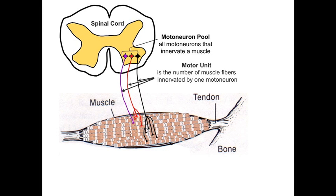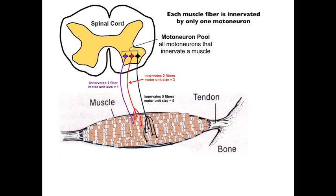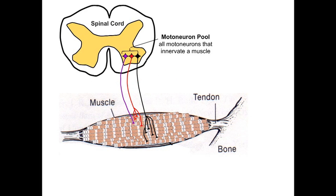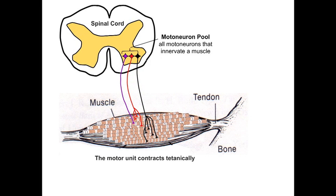Thus, the purple motor neuron, which innervates only one fiber, has a motor unit size of one, while the red neuron has a motor unit size of three, and the black neuron has a motor unit size of five. You should also notice that while a motor neuron can innervate many muscle fibers, each muscle fiber is innervated by only one motor neuron. For example, the muscle fiber innervated by the purple motor neuron receives innervation from the purple motor neuron and not from any other motor neuron. When a motor neuron fires, it always fires at a high rate, and thus all of the fibers innervated by that neuron contract tetanically — they contract as a unit, hence the term motor unit.